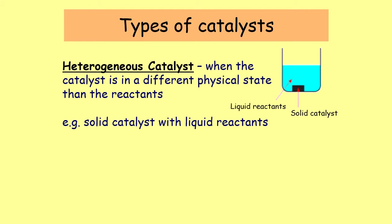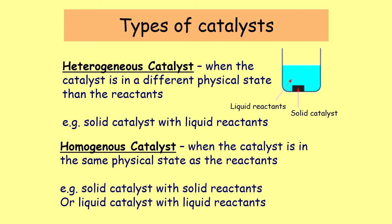At the end of the reaction you can get that solid back — the exact same amount you put in. The second type of catalyst is called a homogeneous catalyst. A homogeneous catalyst is when the catalyst is in the same physical state as the reactants — so a solid catalyst with solid reactants, or a liquid catalyst with liquid reactants. The liquid catalyst with liquid reactants is the most common.